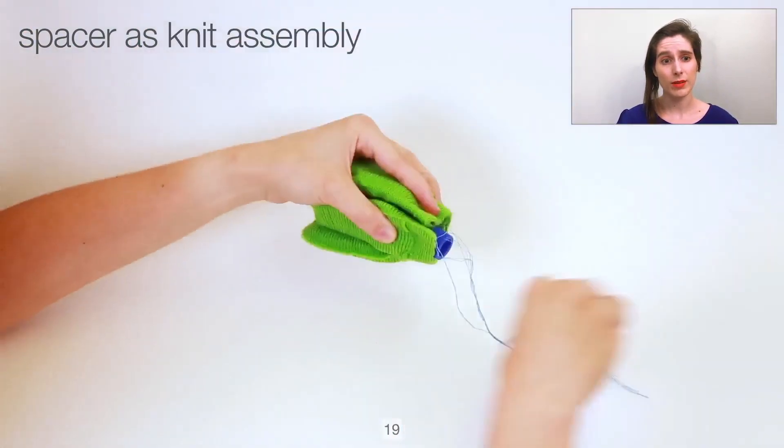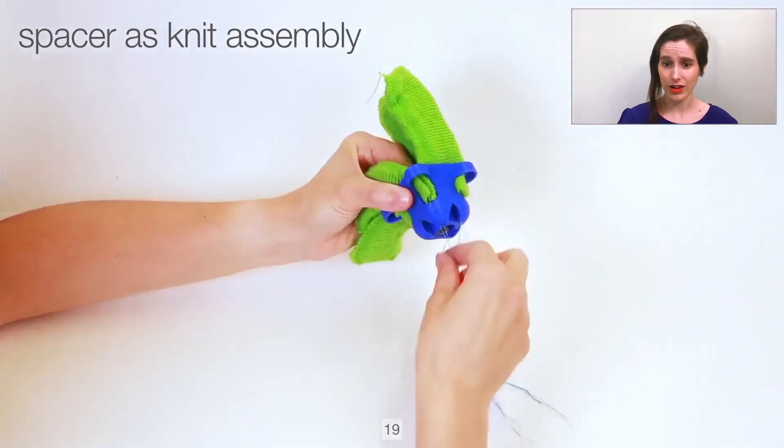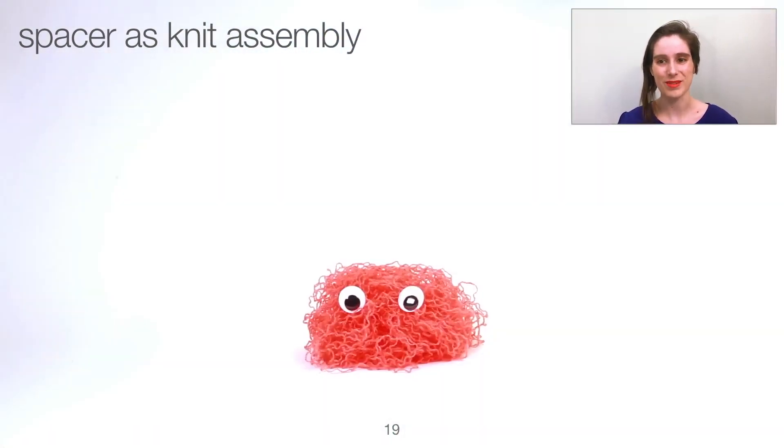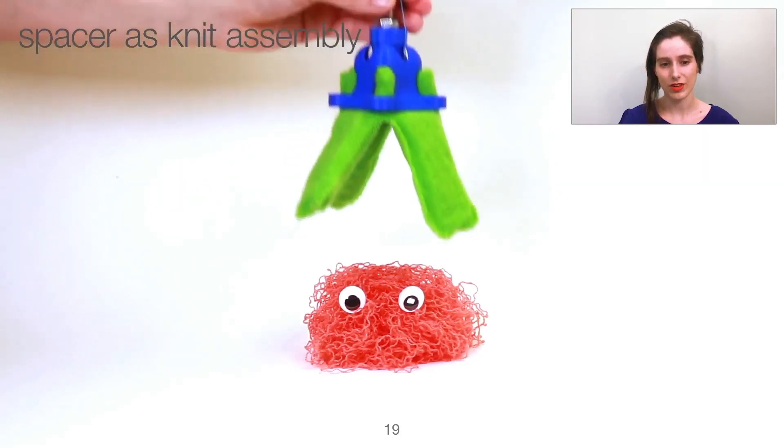Or the spacer fabric can be a fully knit-in stiffener for a soft mechanical gripper. As you see, the fabric part of this assembly is entirely machine knit. There was no hand finishing of the soft component.